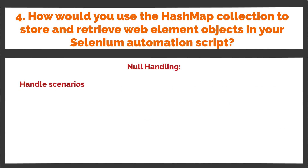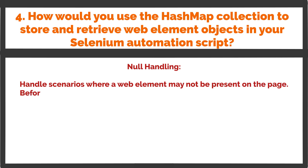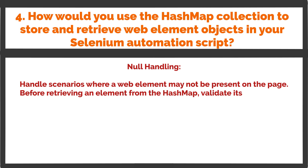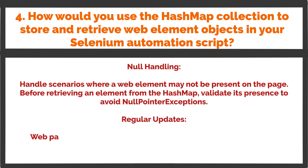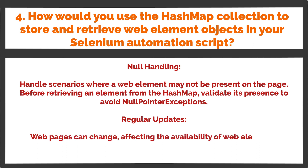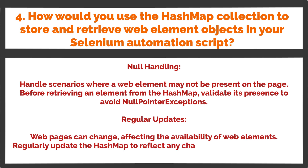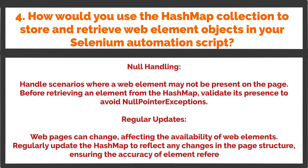Null handling: Handle scenarios where a web element may not be present on the page. Before retrieving an element from the HashMap, validate its presence to avoid null pointer exceptions. Regular updates: Web pages can change, affecting the availability of web elements. Regularly update the HashMap to reflect any changes in the page structure, ensuring the accuracy of element references.